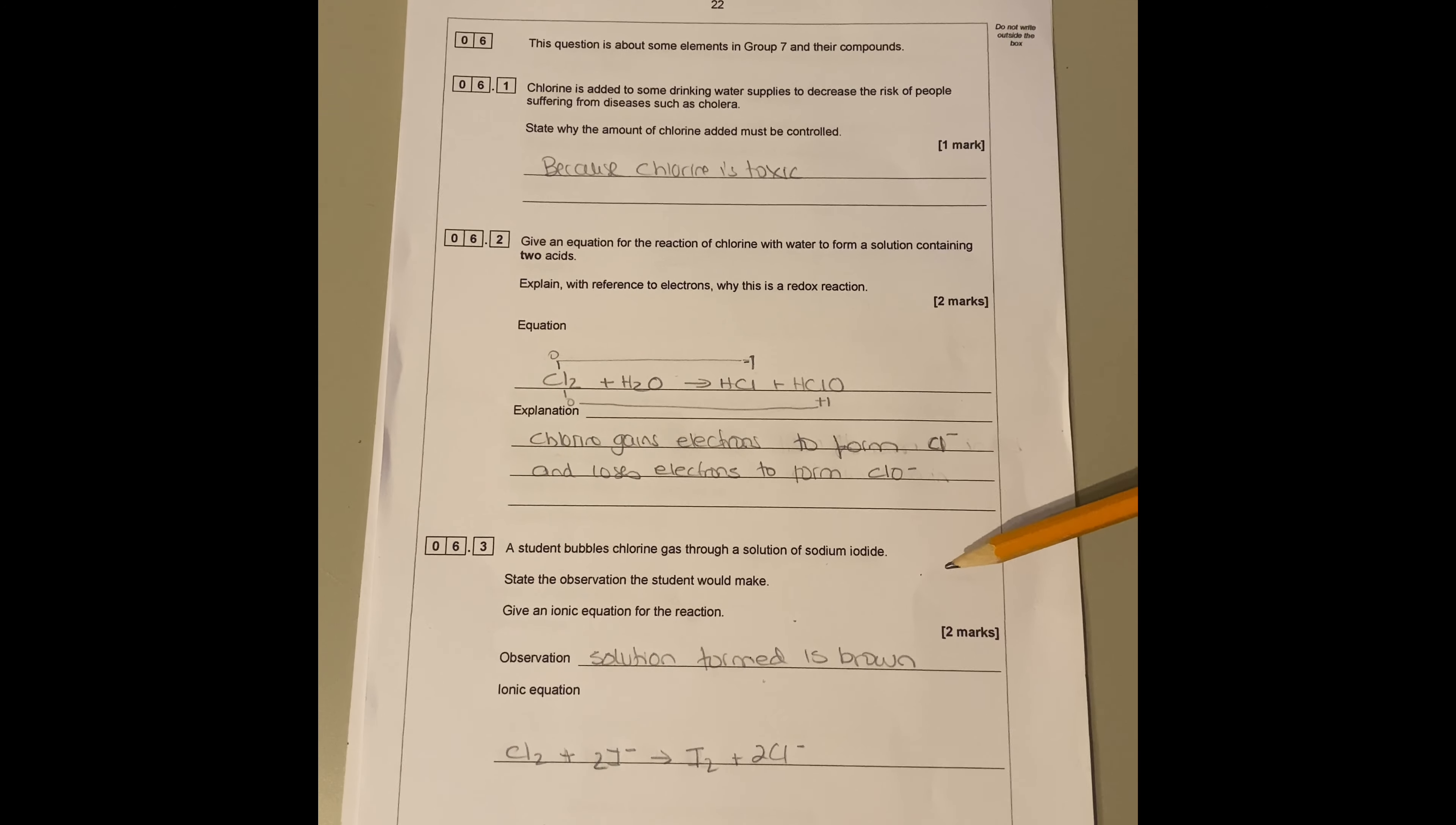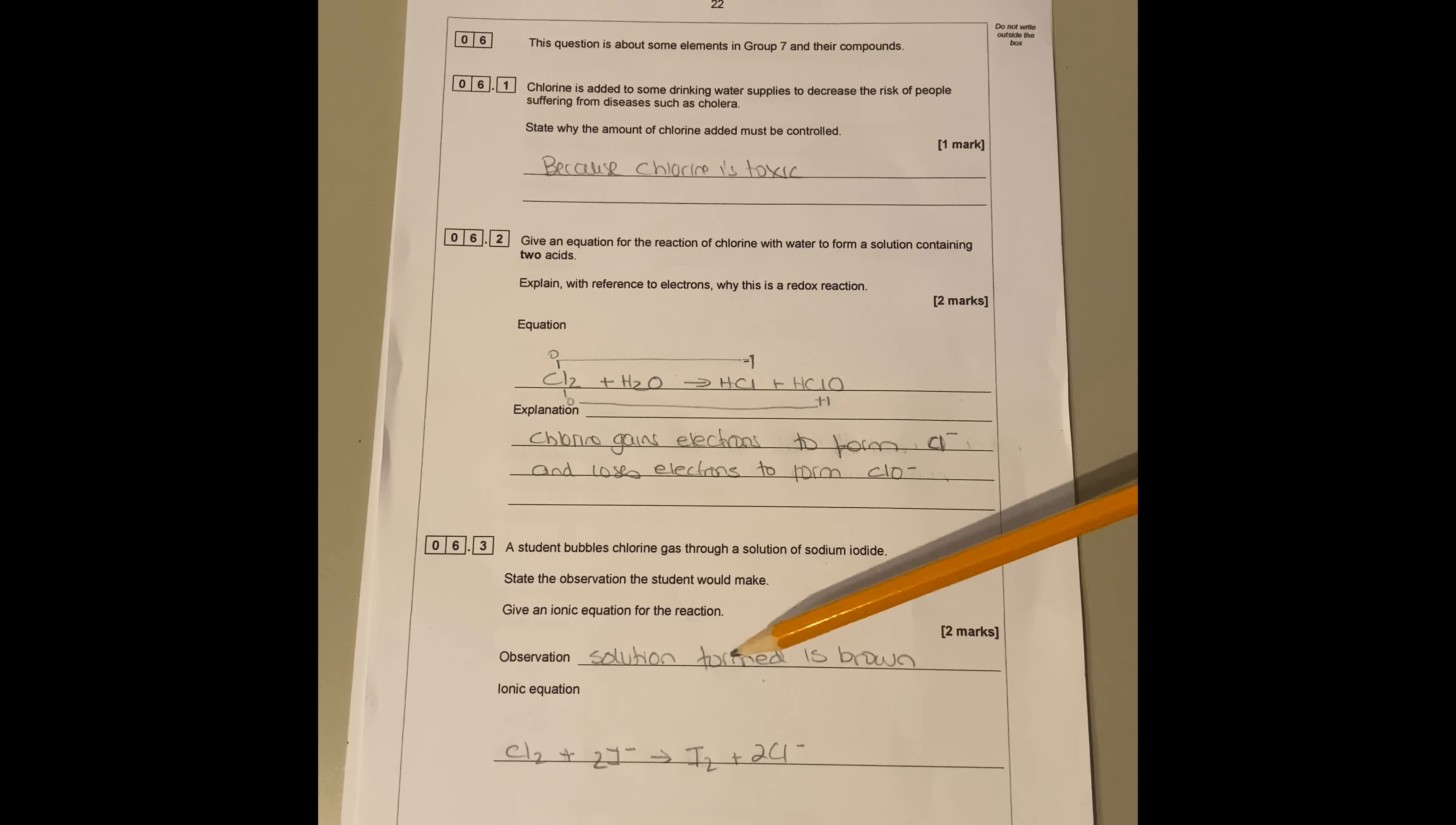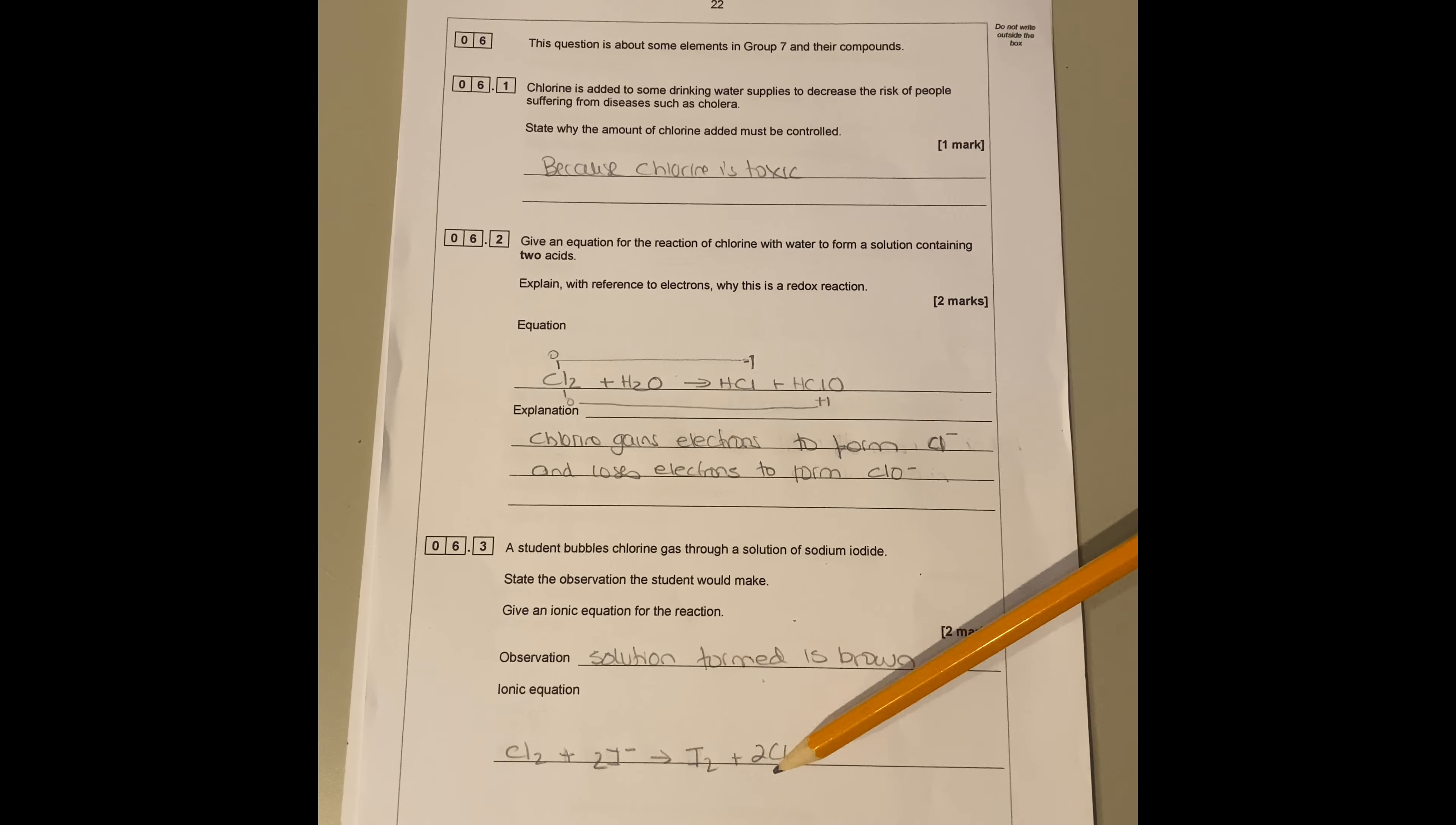The next one says a student bubbles chlorine gas through a solution of sodium iodide. State the observation the student will make and give the ionic equation. This is a displacement reaction. Chlorine plus two iodide ions gives iodine plus two chloride ions. Chlorine is more reactive or it's a stronger oxidizing agent, so it will oxidize the iodide into iodine. The solution formed is going to be brown.